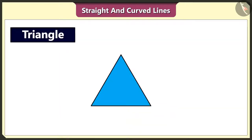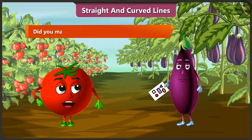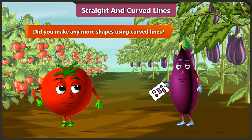Look, this triangle is also made using three straight lines. Yes. And this circle is made using a curved line. Did you make any more shapes using curved lines?